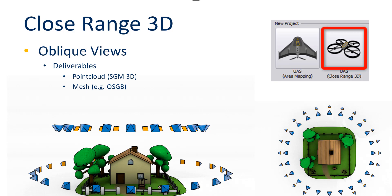If you were looking straight down you would just see the rooftop, but in close range areas we are more interested in the facades of buildings, or for some objects also how they look from a side view.